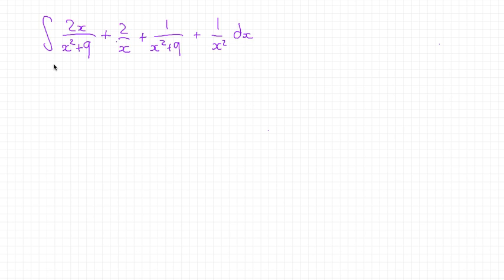Let's find the integral of this massive monstrous thing over here. So we've got 2x divided by x squared plus 9, and then plus 2 over x, 1 over x squared plus 9, plus 1 over x squared, all finding the integral with respect to x.